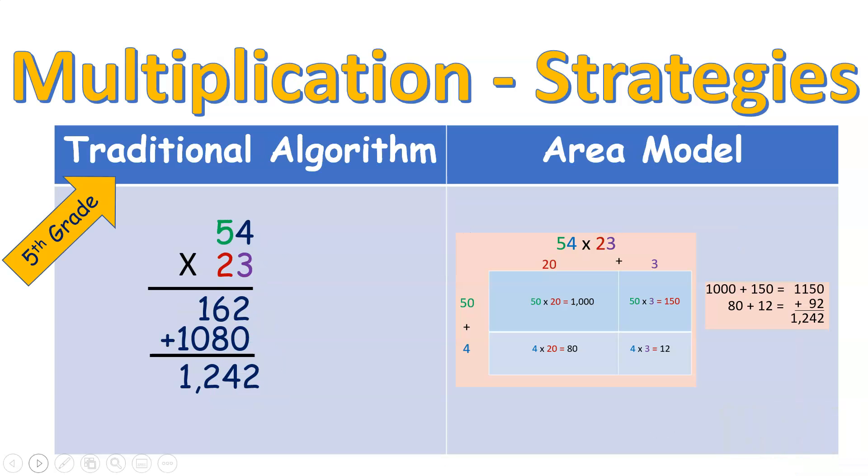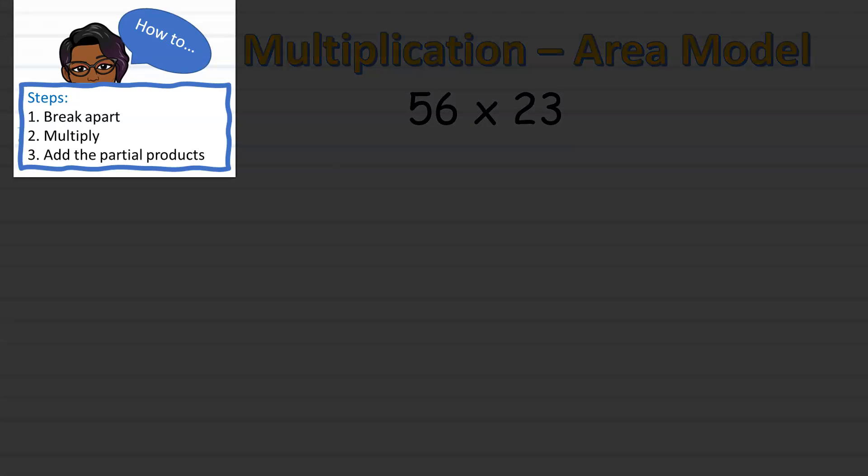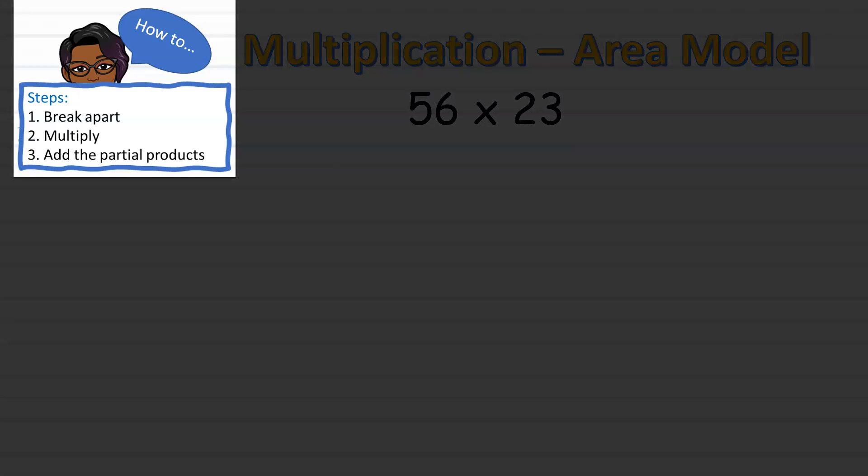The area model, or what some call the box method, is an alternative multiplication strategy taught in third and fourth grade. According to Common Core, the traditional algorithm is not introduced until fifth grade. We will follow three simple steps when using the area model to multiply: first, break apart the numbers; second, multiply; and then add the partial products.